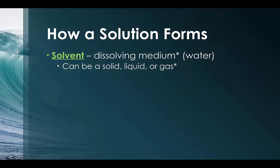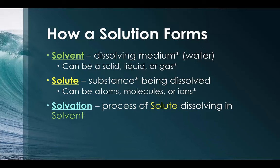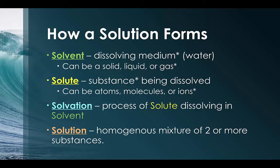So how do we form a solution? A solution is made up of two parts. The first part is the solvent, which is the dissolving medium — the universal solvent is water. Then we have the solute, which is the substance being dissolved, like salt. The solute can be an atom like pure iron, a molecule like sugar, or ions like positive sodium or negative chloride. The process of the solute dissolving in the solvent is called solvation, and the result is a solution — a homogeneous mixture of two or more substances.